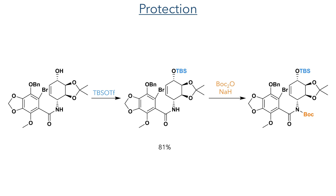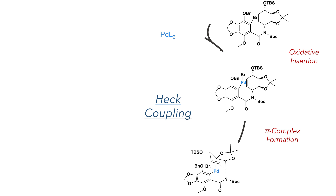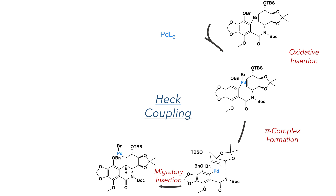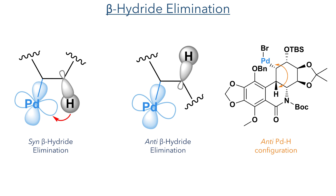With this ring now complete they turned their attention to the Heck reaction, which would complete the skeletal framework. Before this, they found they first had to protect the hydroxyl group and the amine using TBS and Boc groups respectively. In this Heck reaction, palladium first undergoes oxidative addition into the carbon-bromine bond and then forms a pi-complex with the alkene. This undergoes migratory insertion forming the desired carbon-carbon bond and producing a sigma-bonded palladium complex. A beta-hydride elimination then follows to restore the alkene and produce a hydridopalladium bromide species. This undergoes reductive elimination upon reaction with thallium acetate to regenerate the palladium catalyst. This is quite an unusual Heck coupling — the cyclic nature of the product grants a very high degree of conformational rigidity, forcing beta-hydride elimination to occur in an anti-fashion, which is uncommon as it typically occurs with a syn relationship between the palladium and the hydride due to more favourable orbital overlap.